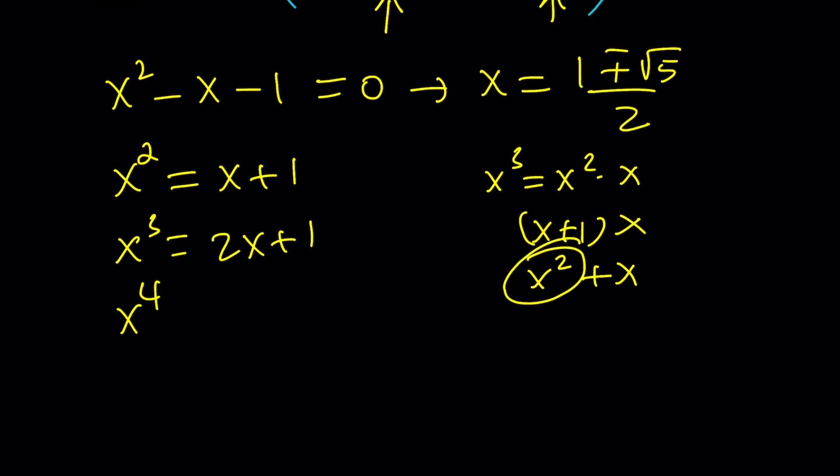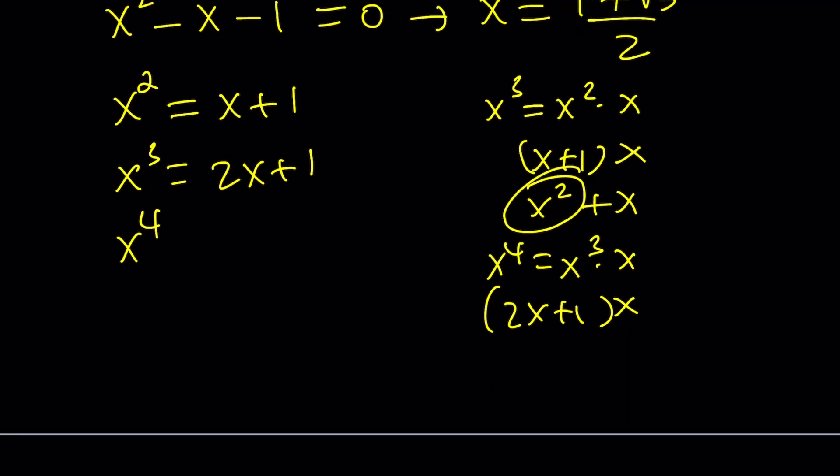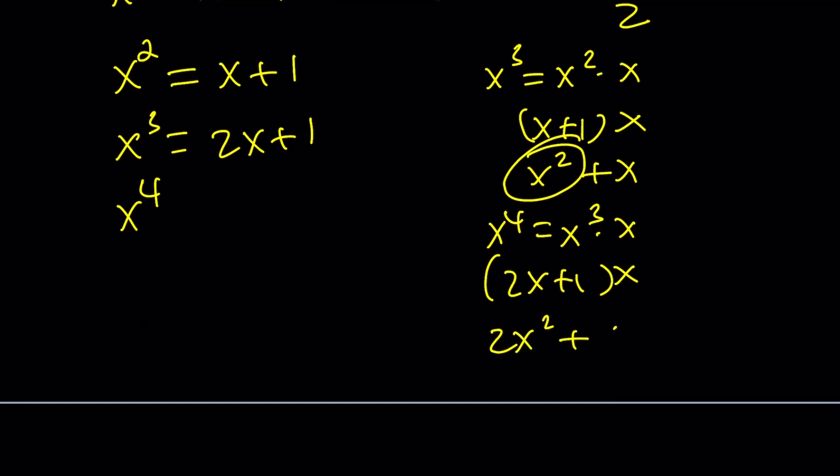And then you want to do x to the fourth power. You multiply x cubed by x, which is 2x plus 1. And then from here, you're going to get 2x squared plus x. And that's going to be 2 times x plus 1, which is 2x plus 2 plus x. And that's going to be 3x plus 2.